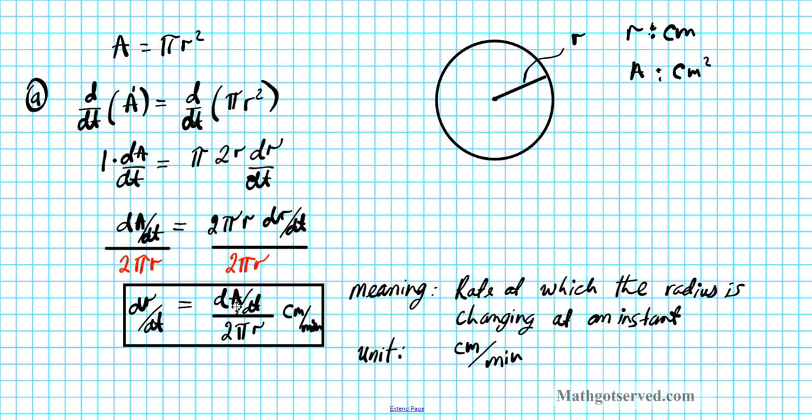Now another way you can do this is if you look at dA/dt, it's centimeters squared per minute. And then 2 pi r is just a centimeter. This cancels with that and you end up with centimeters per minute. So that's another way of finding it out. So that's the first part.